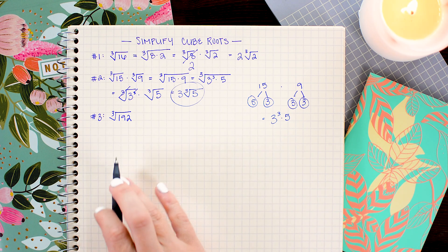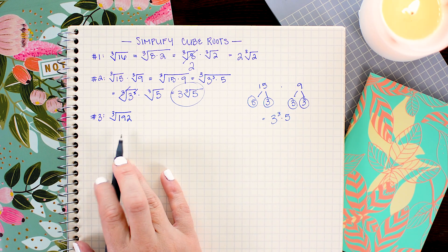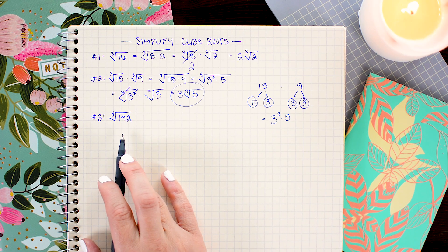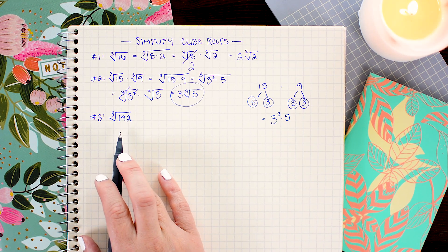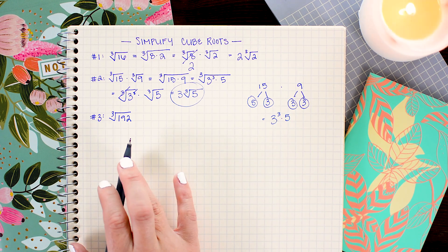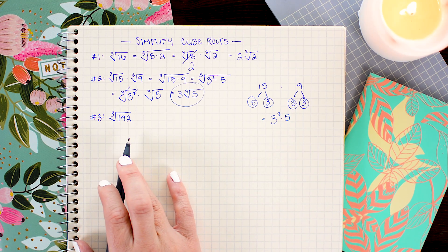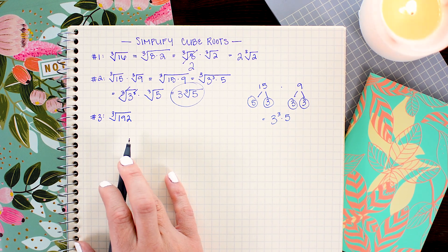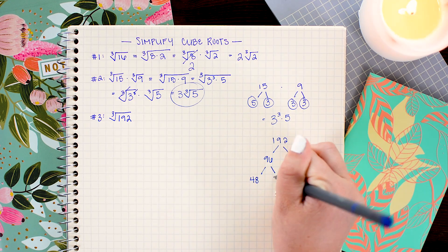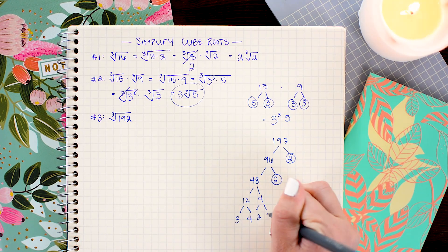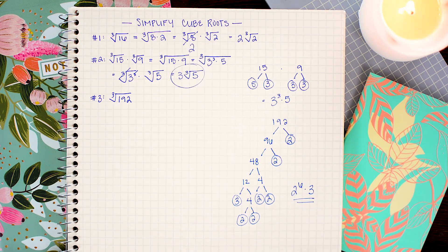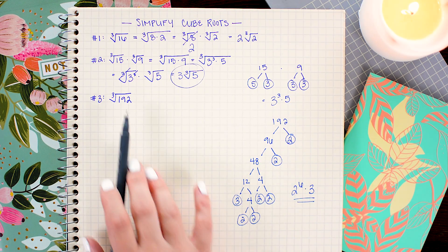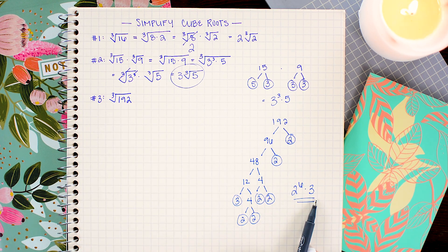For this problem, it's not really obvious if there are any perfect cube factors that go into 192, because 192 is sort of a large number. My go-to trick for this is to always make a factor tree. And when working with the exponents, it's a little bit clearer to see what reduces. So here I found that the prime factorization of 192 is 2 to the 6 times 3.